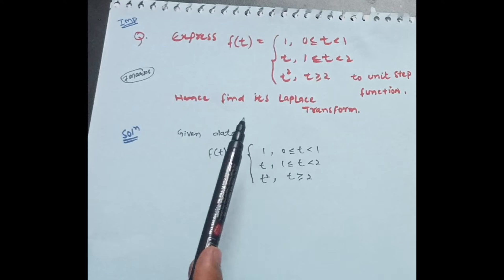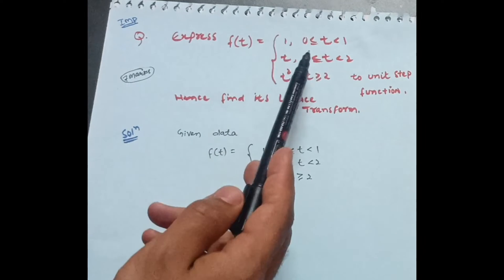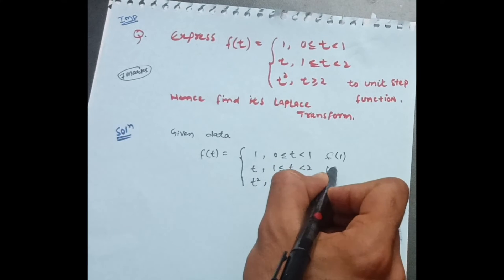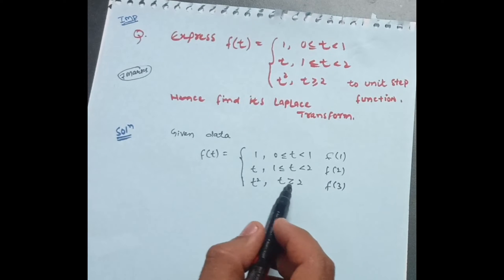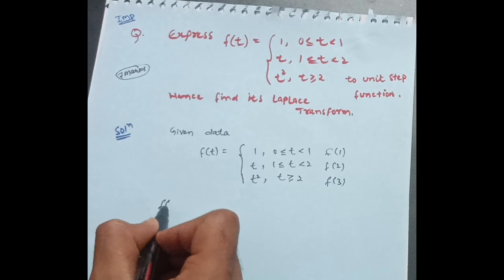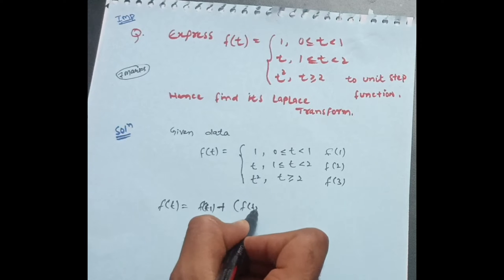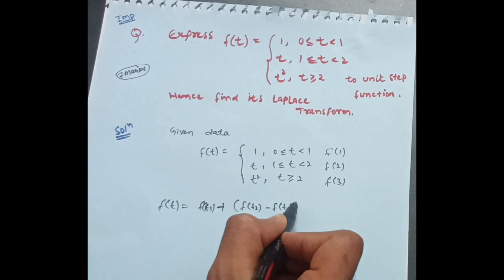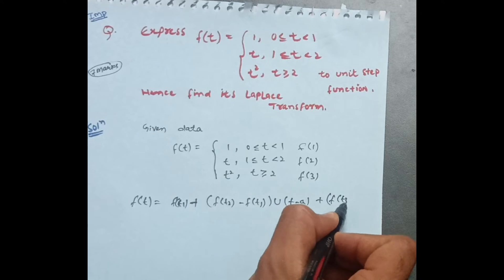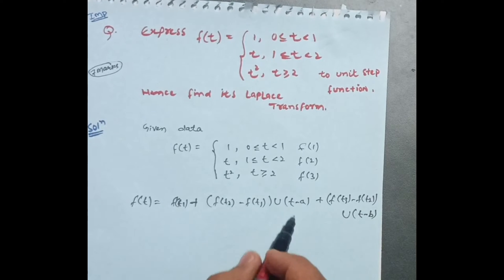In this concept, you have to remember only three formulas. First, write down the given data. I will call the three pieces f1, f2, and f3. The first formula is: f(t) = f1 + [f2 − f1]·u(t−a) + [f3 − f2]·u(t−b), where a and b are the boundary points of the intervals.